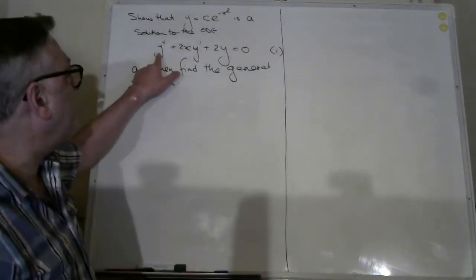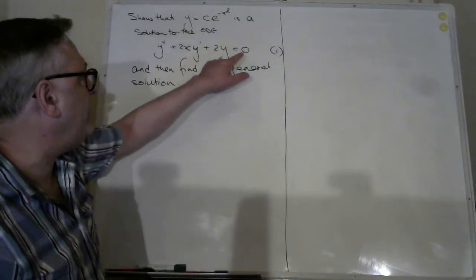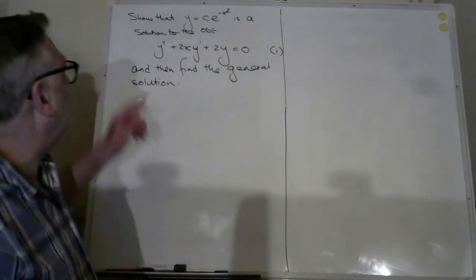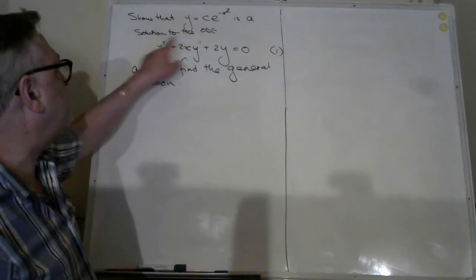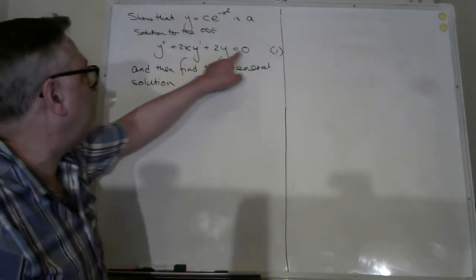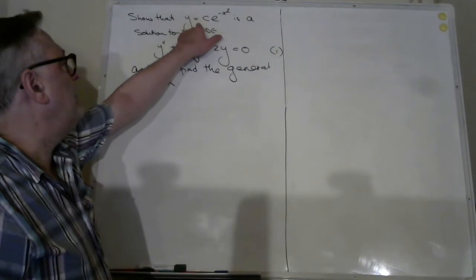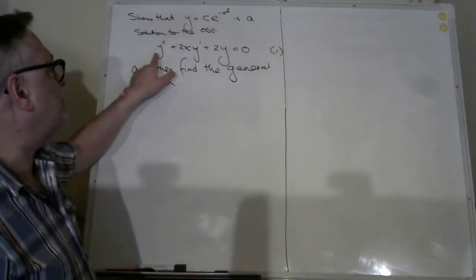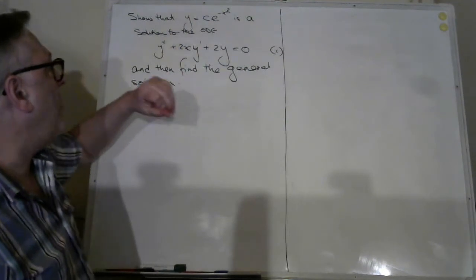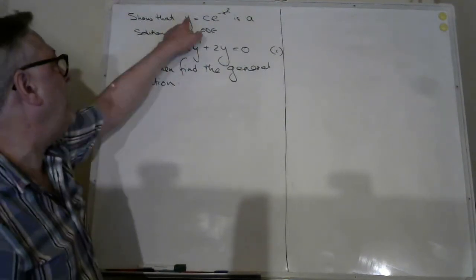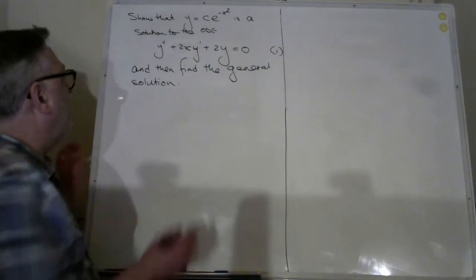We're going to continue with another example where we have y double prime plus 2x y prime plus 2y equals 0. The question asks: show that y equals c e to the minus x squared is a solution to this ordinary differential equation, and then find the general solution. So we're asked to prove that y equals c e to the minus x squared solves this left-hand side and equates it to 0, when we substitute back into the equation along with both its first and second derivatives.